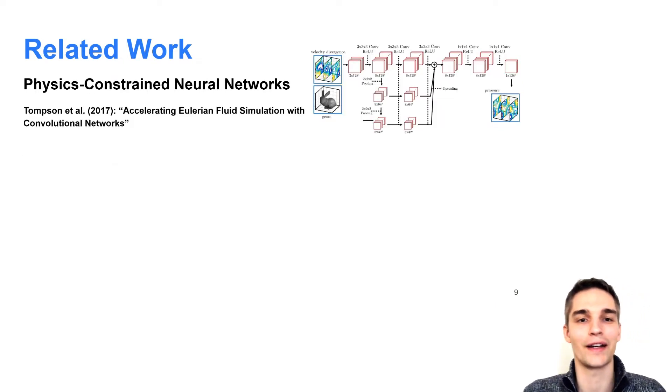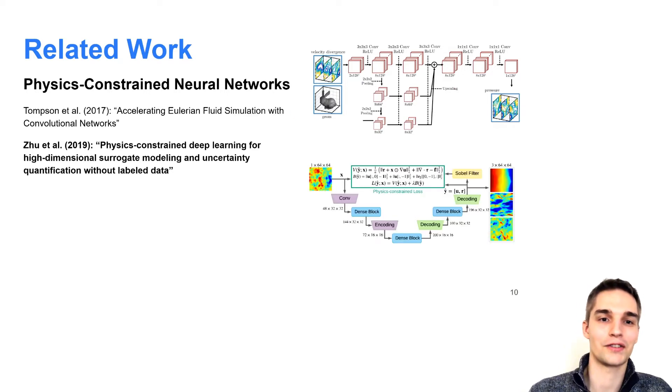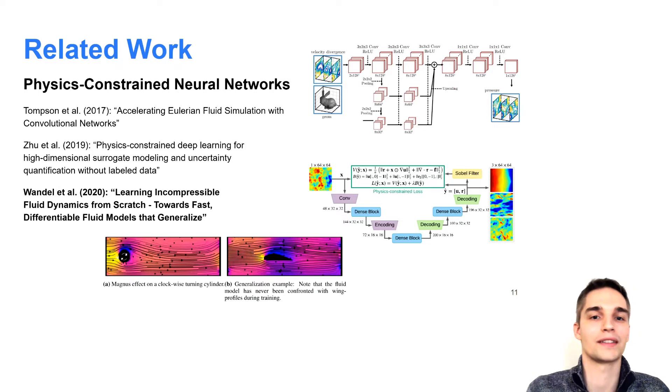In contrast, physics-constrained approaches usually rely on a grid-based representation of the domain. This allows to train a convolutional neural network that can also generalize to new domains. To learn the dynamics of a PDE on that grid, the underlying PDE can be integrated into the loss function by computing finite differences. Important works in this field include the work by Tompson et al, who learned a pressure projection step using a 3D CNN and thus accelerated Eulerian fluid simulations. Zhu et al used the physics-constrained loss to learn Darcy flows and last year we presented a method to learn the incompressible Navier-Stokes equation from scratch.